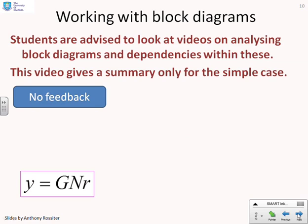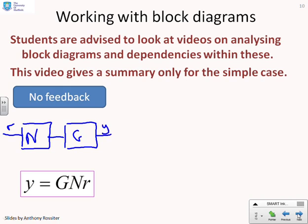So working with block diagrams. Students are advised to look at the videos on analyzing block diagrams and the dependencies on signals within these diagrams. This video is only going to give a summary of block diagram algebra for the simple case. So first, open loop, no feedback. What did we assume? We assumed we had a target r which came into some sort of inverse model which you estimated and that was N, and that generated an input which went into G and that gave you y. That was the sort of block diagram you got if you had open loop. And you'll remember we showed in the first video that that really does not work.